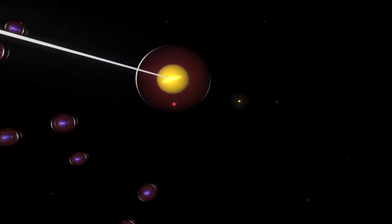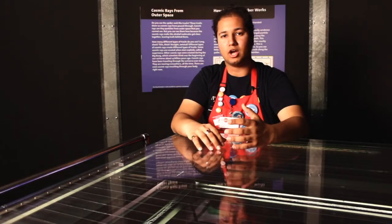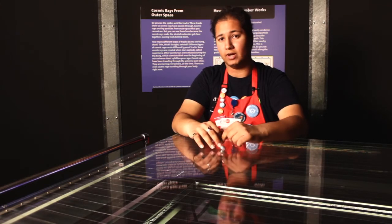These cosmic rays are passing through our planet and they also are passing through our bodies. Cosmic rays are really tiny, we can't even see them, but let's see how this exhibit works.